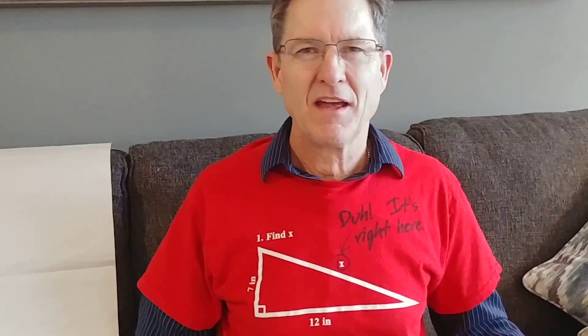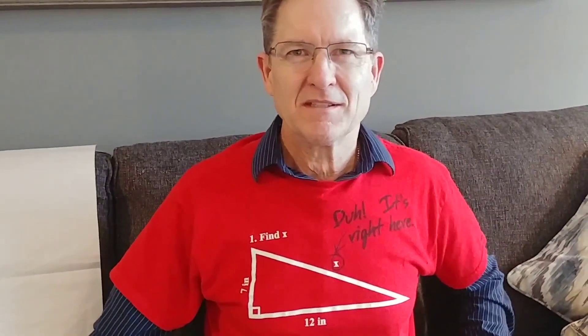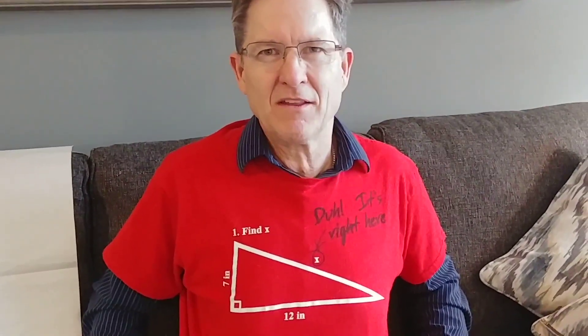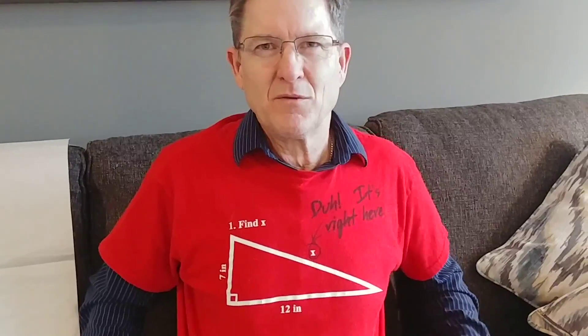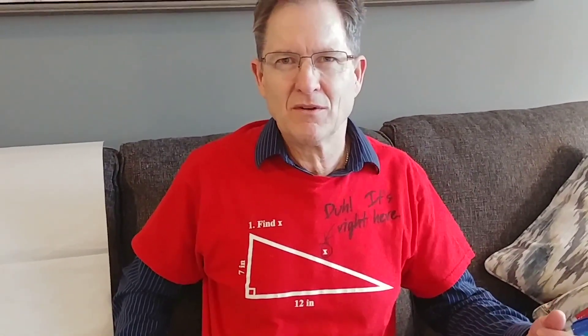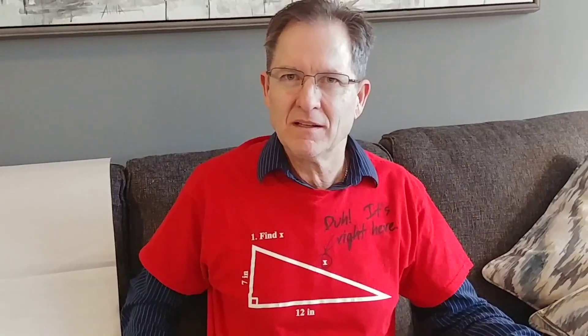It's pretty simple. It's just the Pythagorean theorem. So all you have to do is square 12 — that's 144 — square 7 — that's 49 — and add them together. 144 plus 50 would be 194, so if you're only adding 49, that's 193.